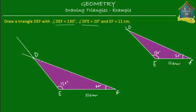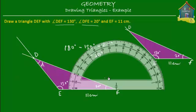Now how about this angle? Shall we measure this angle and prove that it is equal to 180 degrees minus 130 degrees minus 20 degrees, which would be what? Well, 180 minus 130 is 50, and 50 minus 20 is 30. So angle D, or EDF, should be equal to 30 degrees. Let's use a protractor and see if it really is the case.